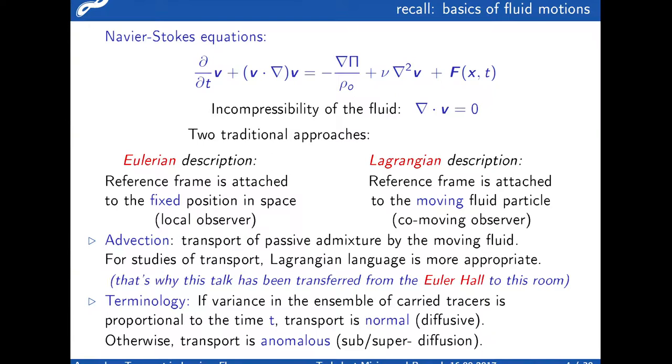What do we call normal transport? We take an ensemble of particles, and if the variance in that ensemble grows linearly with time, we say it's normal diffusion. If it goes slower, we call it subdiffusion. If it goes faster, we say it's superdiffusion.